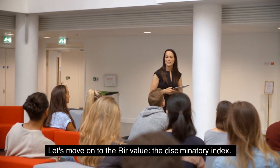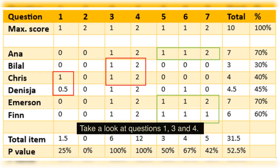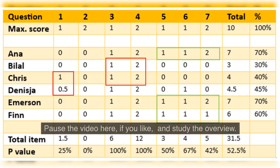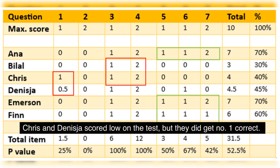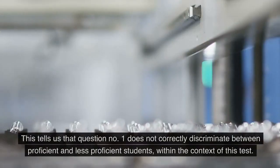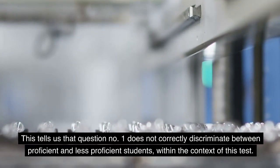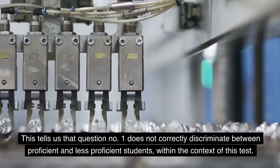Let's move on and take a look at the rit value, or the discriminatory index. Take a look at questions 1, 3, and 4. Chris and Danisha scored low on the test but they did get number 1 correct. Anna and Emerson, on the other hand, scored high overall on the test but got question number 1 wrong. This tells us that question number 1 does not correctly discriminate between proficient and less proficient students within the context of this test.